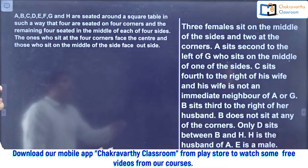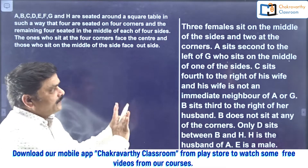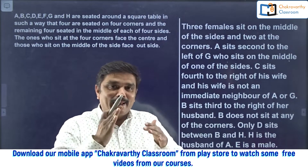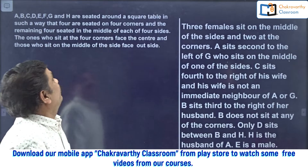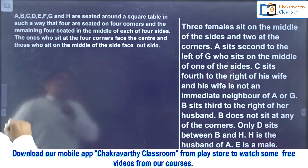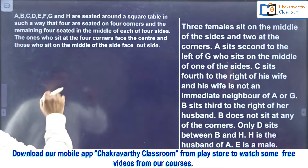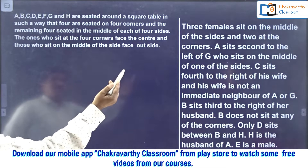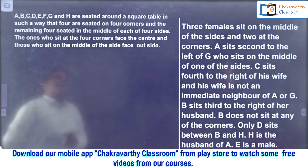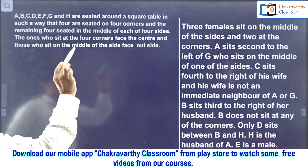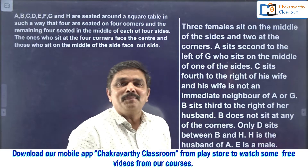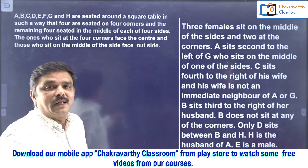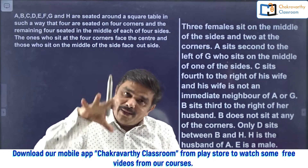Now let's start the question. First, read the question properly. Read the basic data at least properly and analyze something there. What exactly have they given? 8 persons A to H are seated around a square table in such a way that 4 are seated on the 4 corners and the remaining 4 are seated in the middle of each of the sides. By this time you must have understood this. Just visualize this one — not only visualizing, for this type of question you need to write on paper.